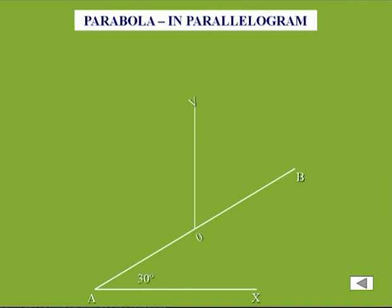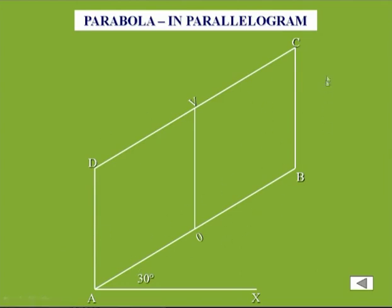Now moving to the second method of construction of parabola, that is in the parallelogram. The construction methodology for the parallelogram method and rectangle method is similar, but here the parallelogram is constructed at some angle. The dimensions of the sides of the parallelogram remain the same — 100 meters by 150 meters, same as in the rectangle method. Whatever two sides are given in the rectangle method, similarly two sides will be given in the parallelogram method. We will divide the parallelogram into equal divisions and then divide the horizontal line into the same number of equal divisions on both sides.